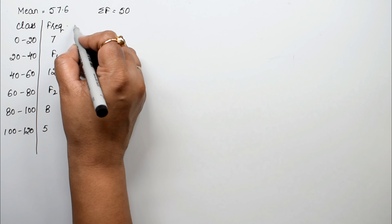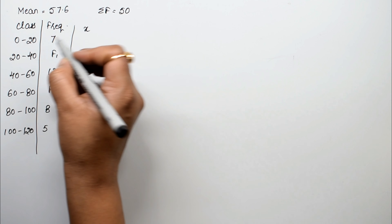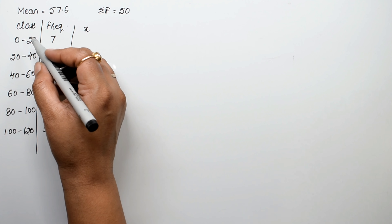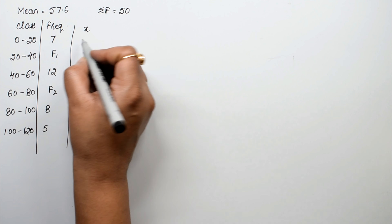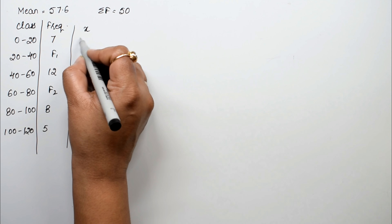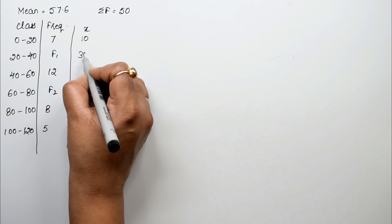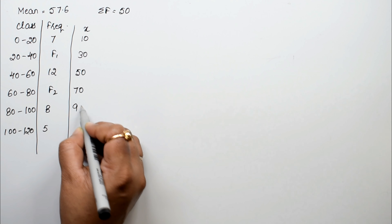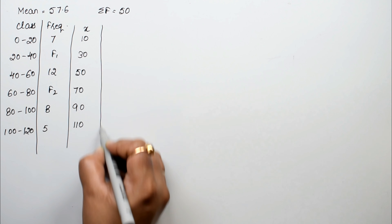First, we write the class mark x, which is upper limit plus lower limit divided by 2. So we can write directly: 20 divided by 2 is 10, giving class marks of 10, 30, 50, 70, 90, and 110.